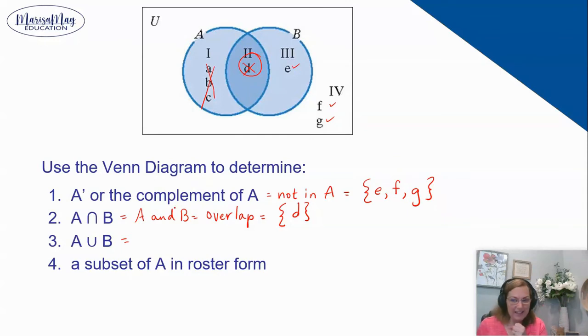Everything in A, that's A, B, C, D, and everything in B, that's D we already have it written, and E. And the overlap, that is D, we already have it written. So it's everything in A, everything in B, and everything in the overlap as well.